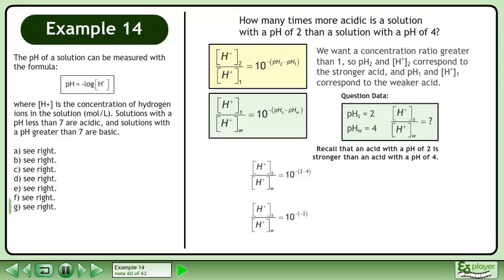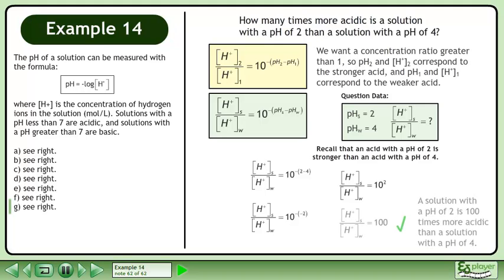In the exponent, 2 minus 4 equals negative 2. Double negatives become a positive, giving us 10 squared. The concentration ratio is 100. A solution with a pH of 2 is 100 times more acidic than a solution with a pH of 4.